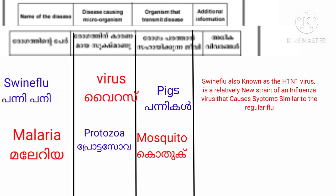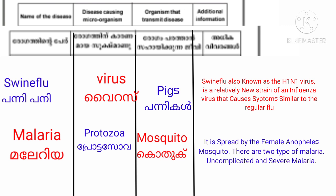The next disease is Malaria. The disease-causing microorganism is a Protozoa. The organism that transmits the disease is the Mosquito. Additional information: it is spread by the female Anopheles mosquito. There are two types of malaria — uncomplicated and severe malaria.